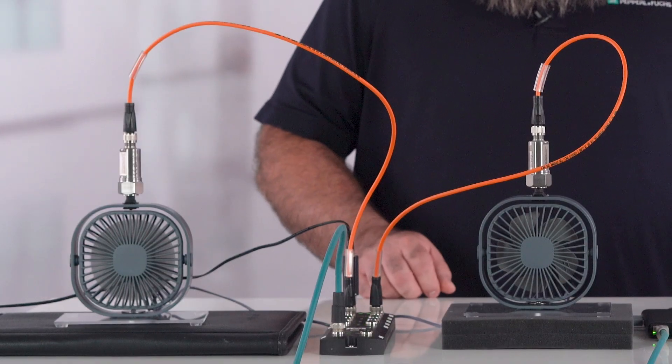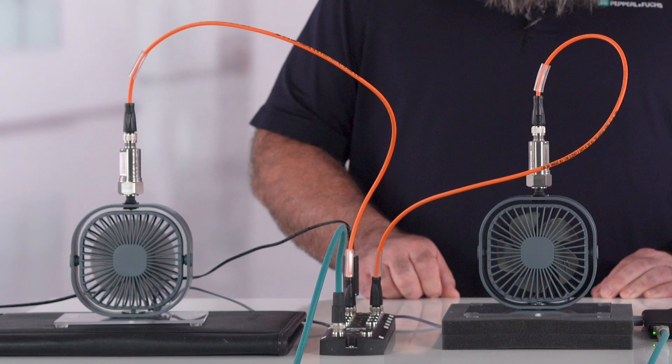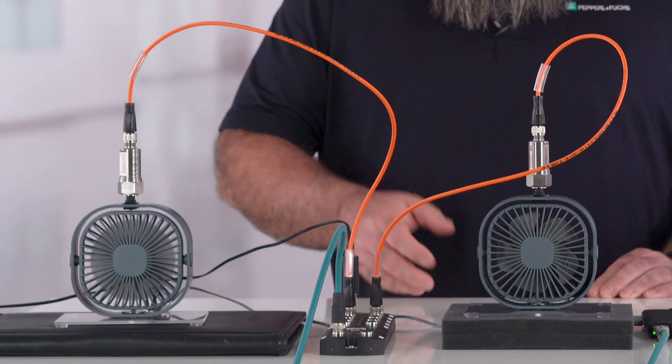I have two fans set up, each with its own vibration sensor. The display on the screen was created in Node-RED to show the sensor output in real time through the OPC UA output from the ICE2 block, which is in the center.